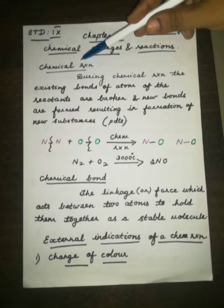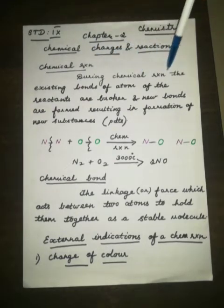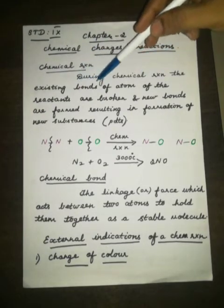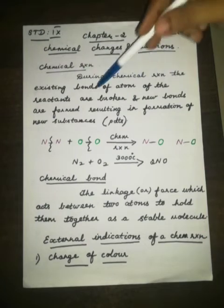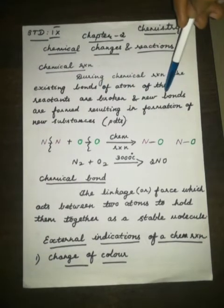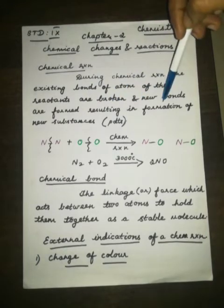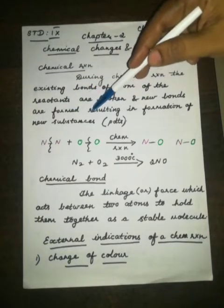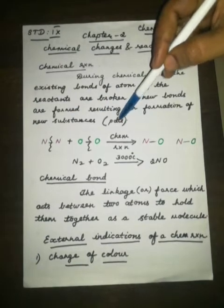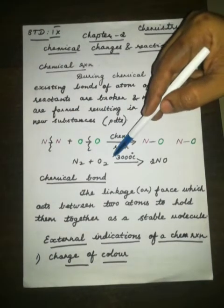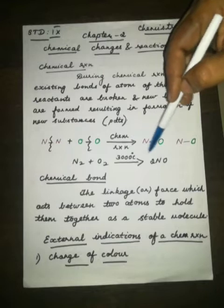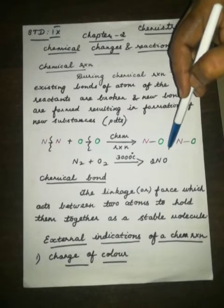We will see the definition of chemical reaction. During chemical reaction, the existing bonds of atoms of the reactants are broken and new bonds are formed resulting in formation of new substances. When you take the reaction of nitrogen with oxygen at 3000 degree Celsius, nitrogen monoxide is formed.